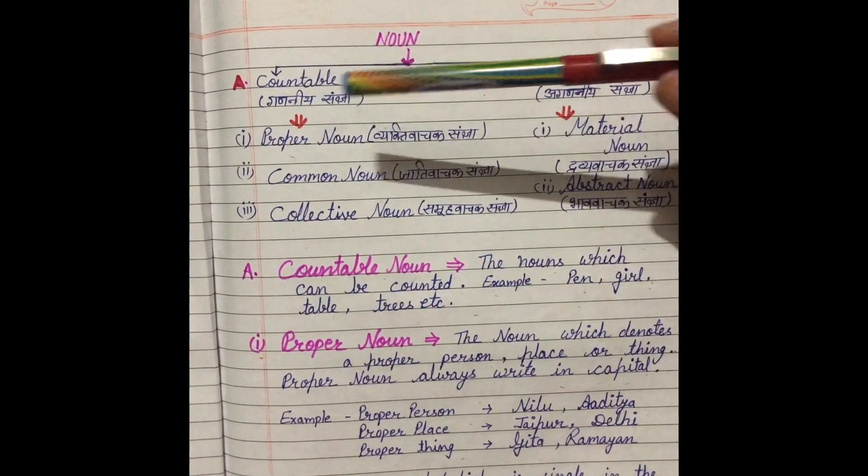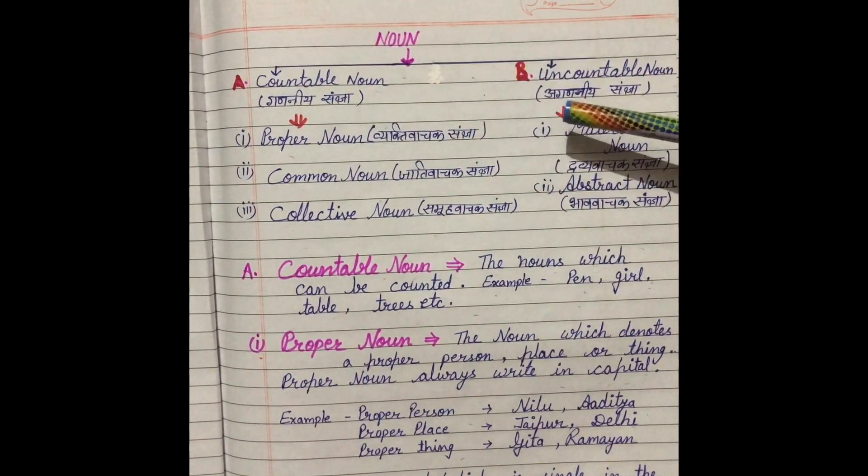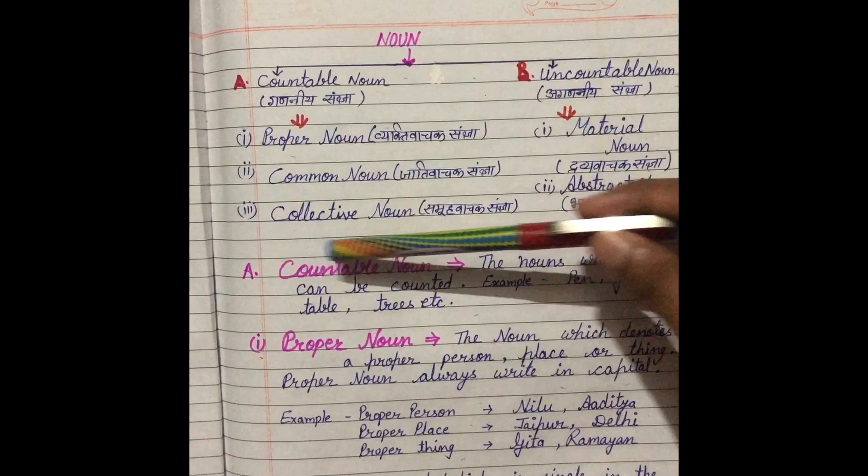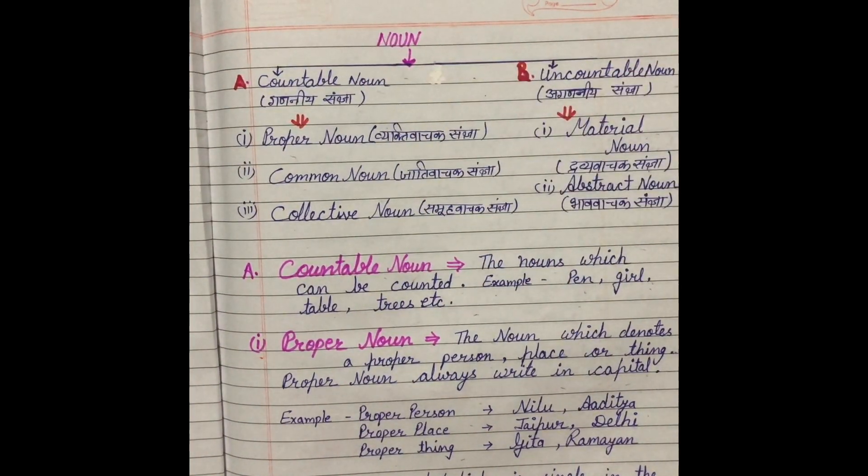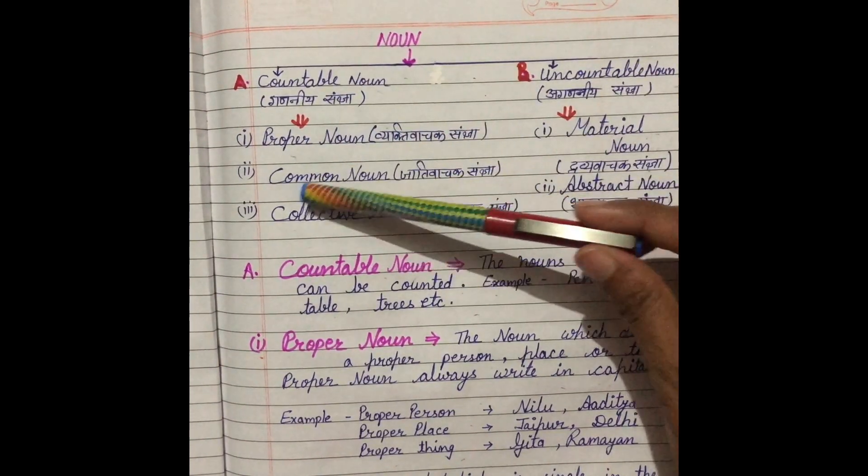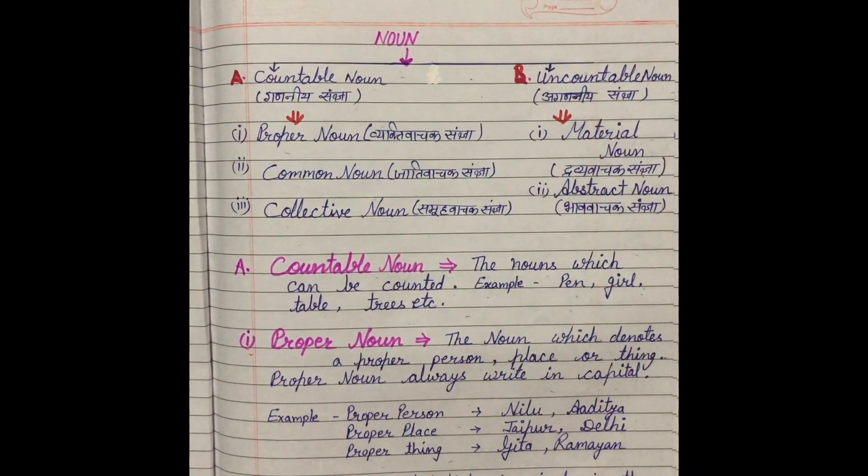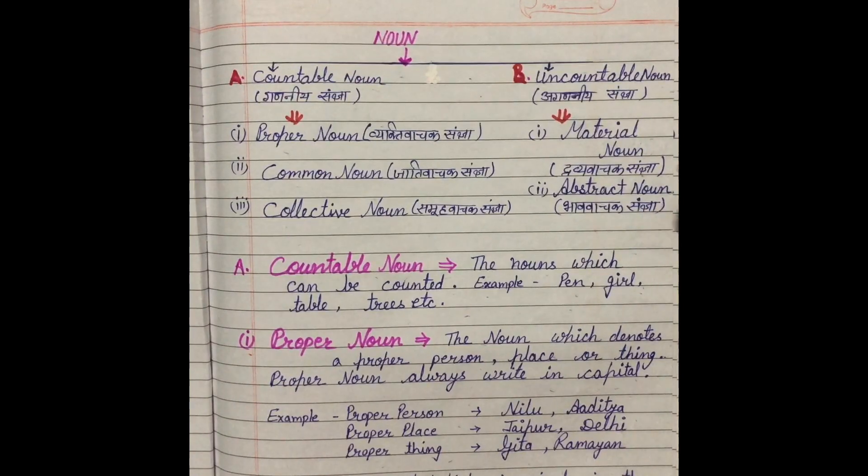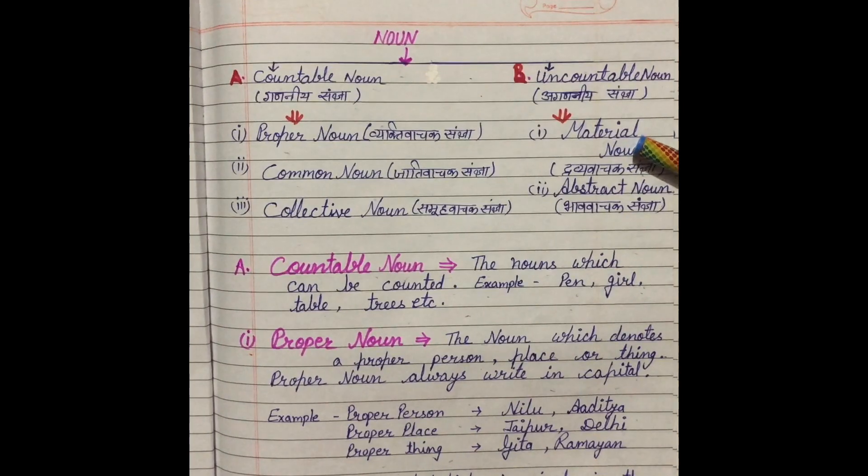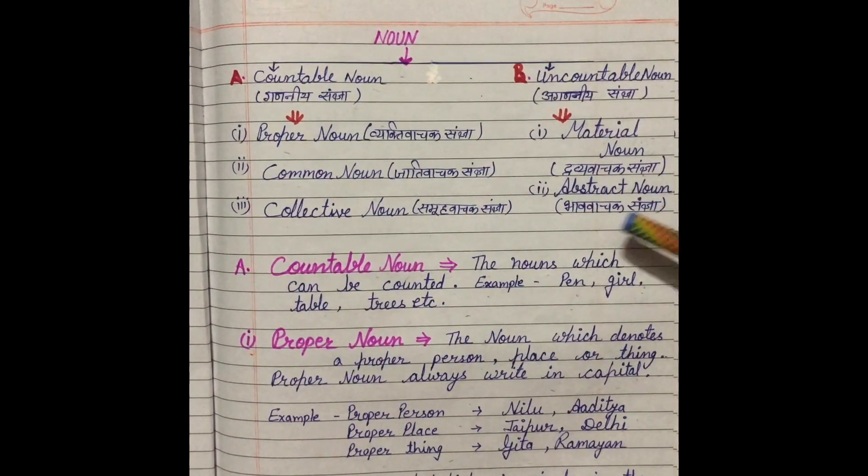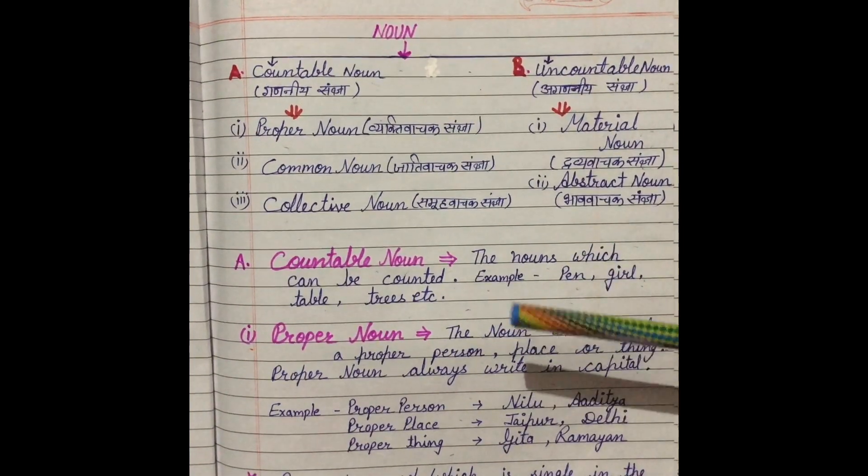There are two types of noun. Countable noun, it means ganiya sangya. Uncountable noun, it means aganiya sangya. As we know, there are five types of noun and three types - proper noun, common noun and collective noun - these are included into countable noun. First of all, we will see countable nouns.